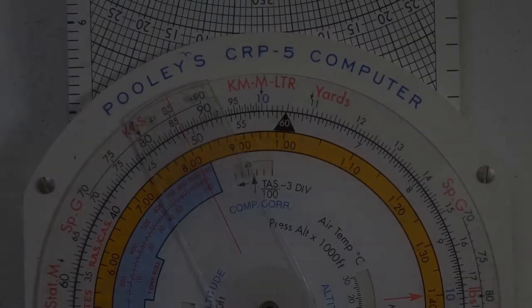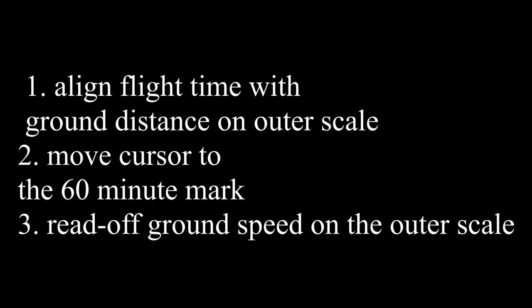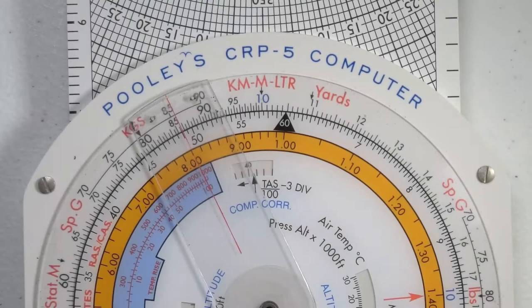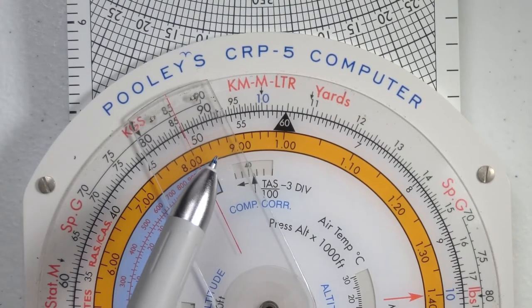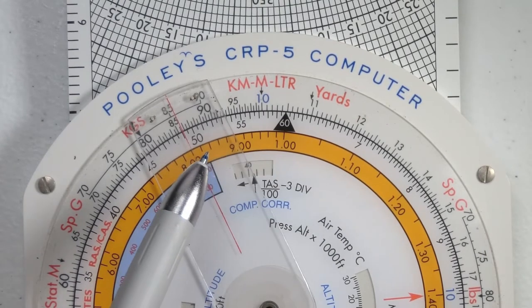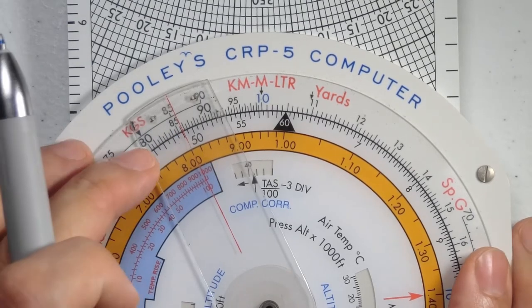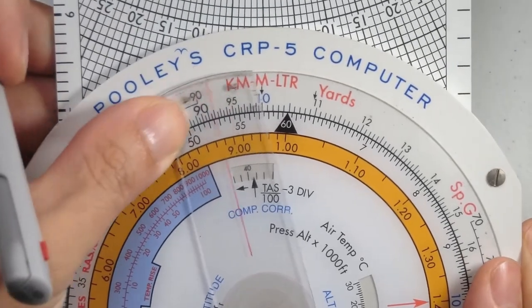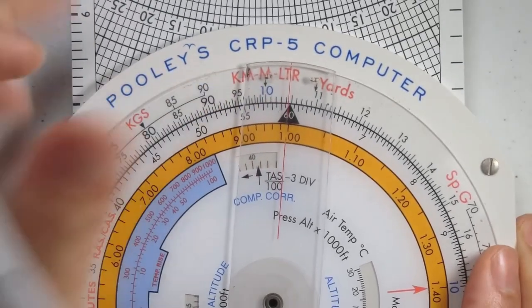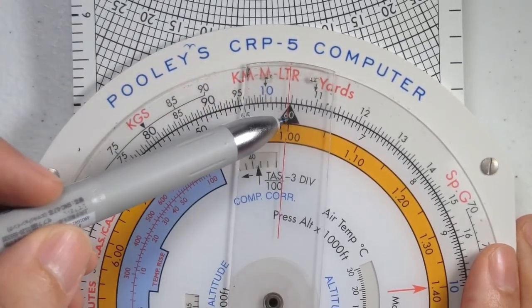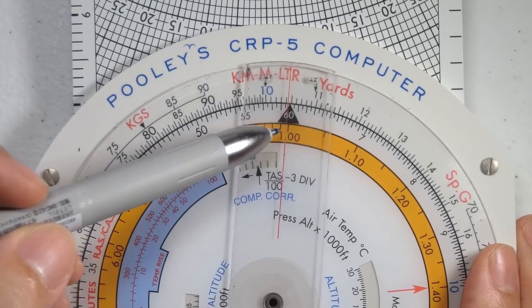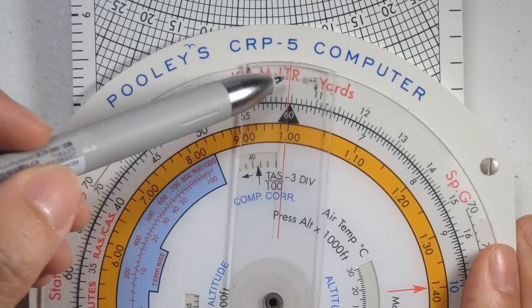It takes three steps to solve this problem. The first step is to align the flight time with the distance covered over the ground. The second step would be to move the cursor over the 60 minute marker. And the third step would be to read off the corresponding value on the outer scale.